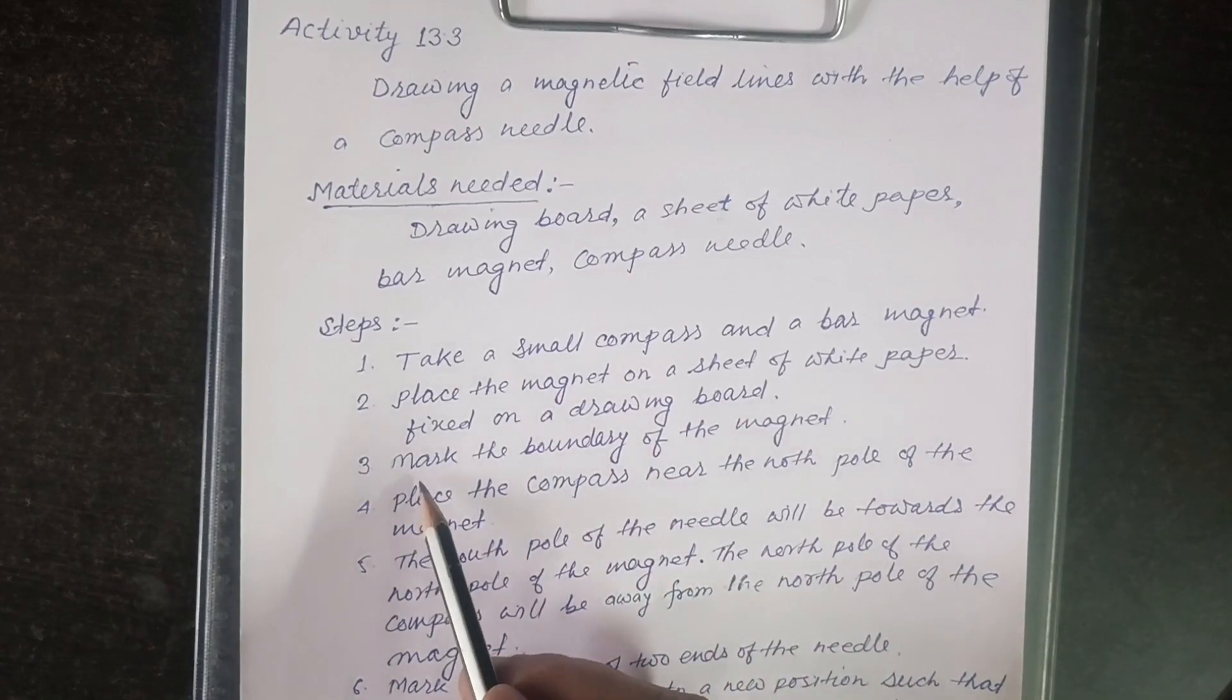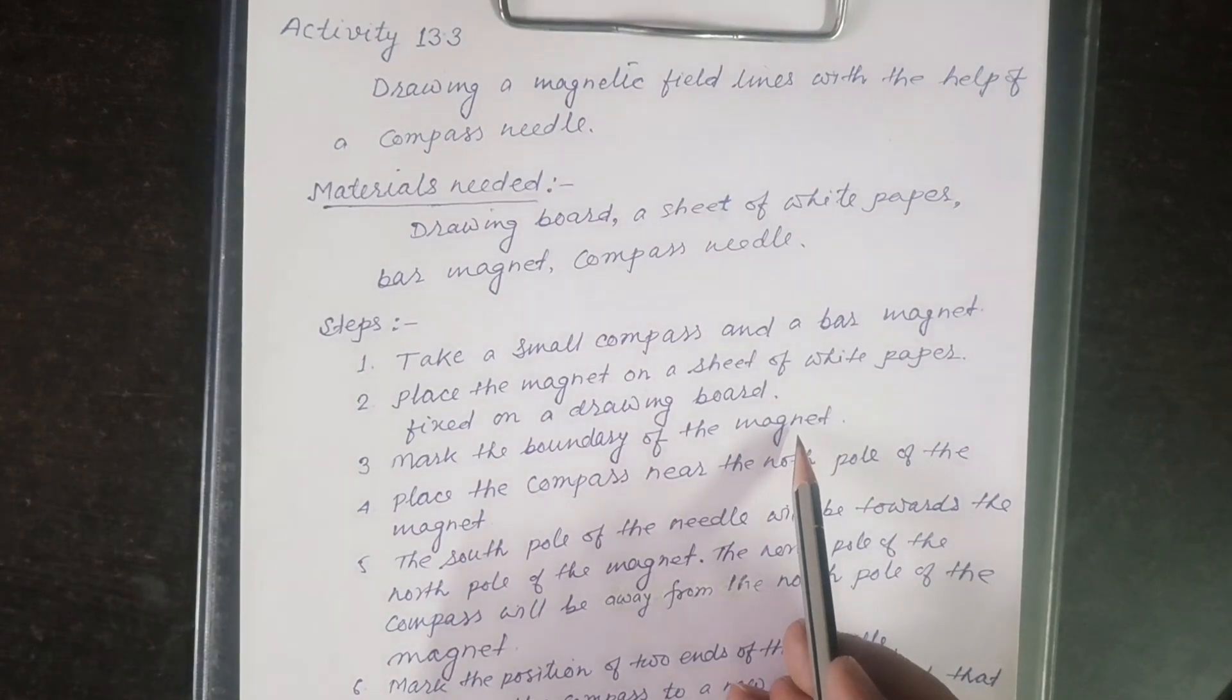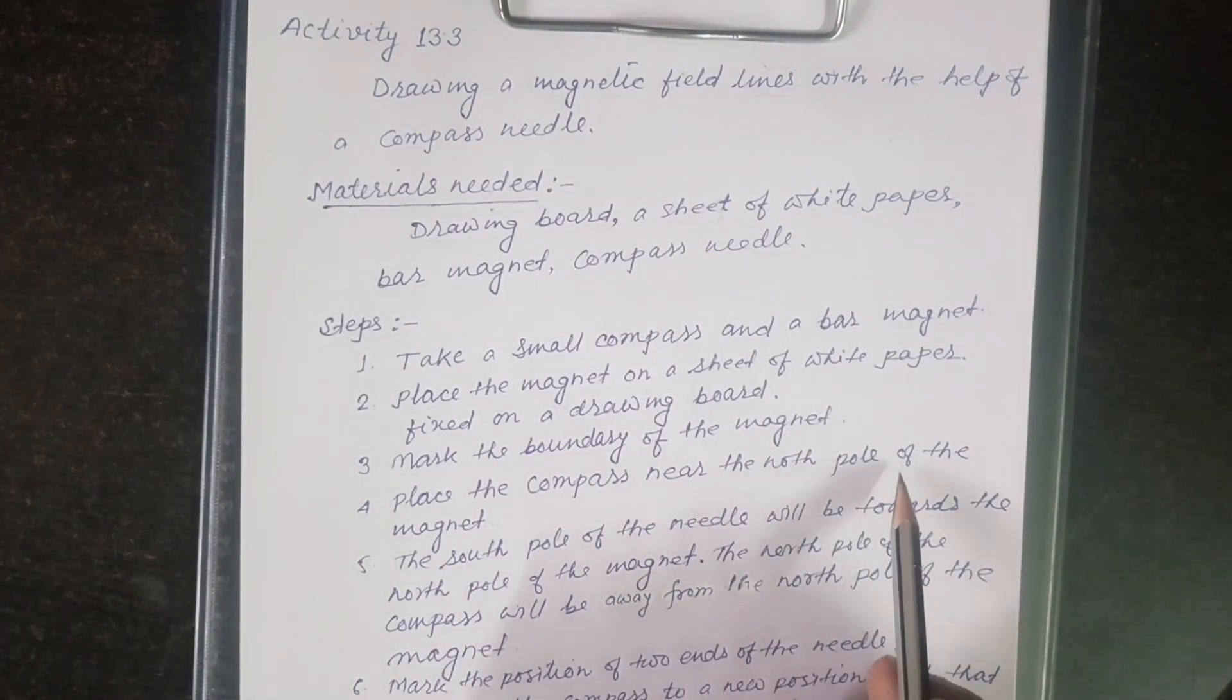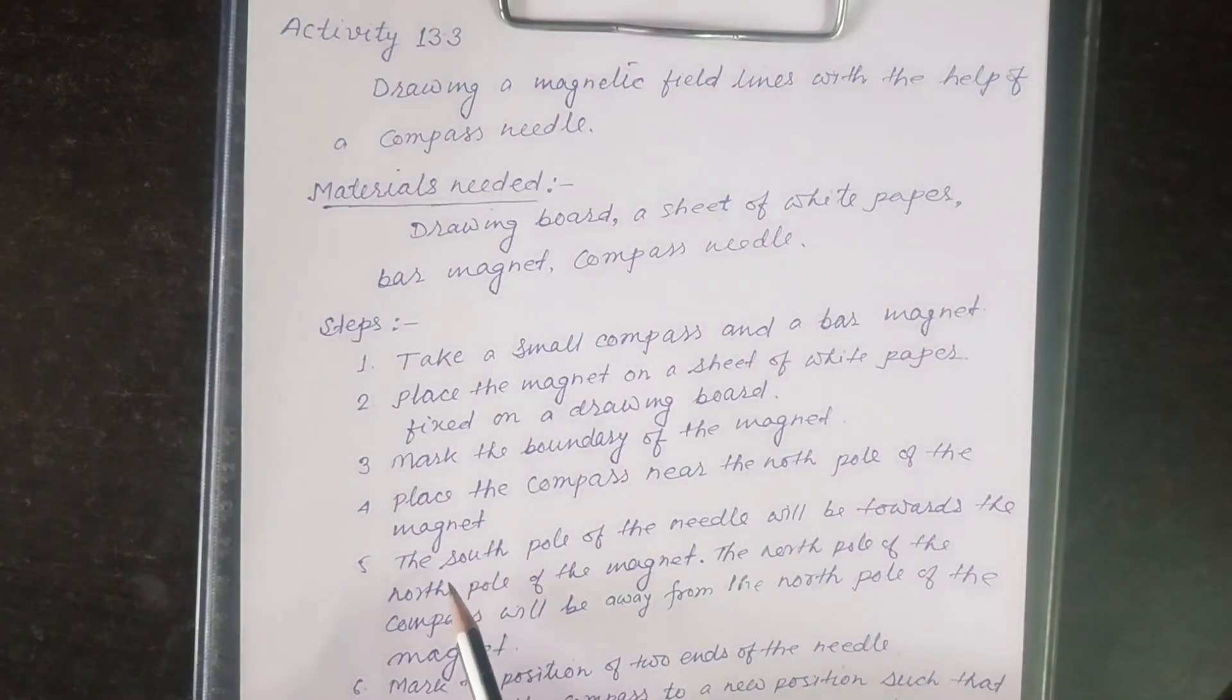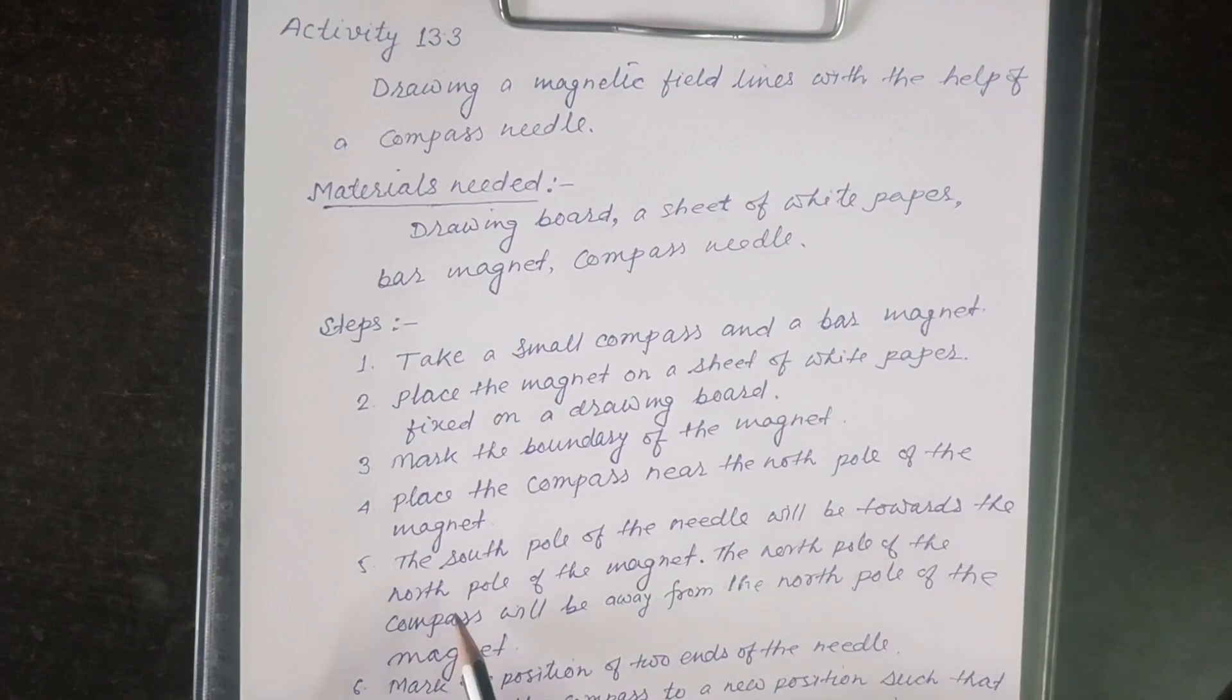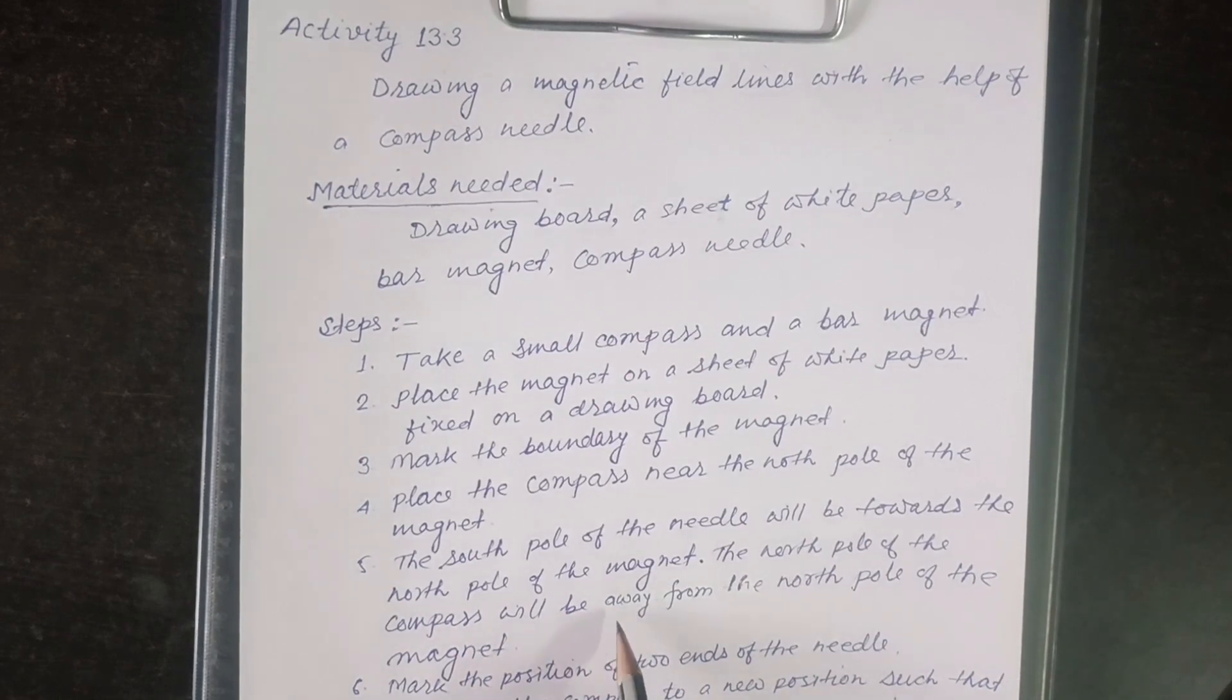Number three: Mark the boundary of the magnet. Place the compass near the north pole of the magnet. The south pole of the needle will be towards the north pole of the magnet, and the north pole of the compass will be away from the north pole of the magnet.